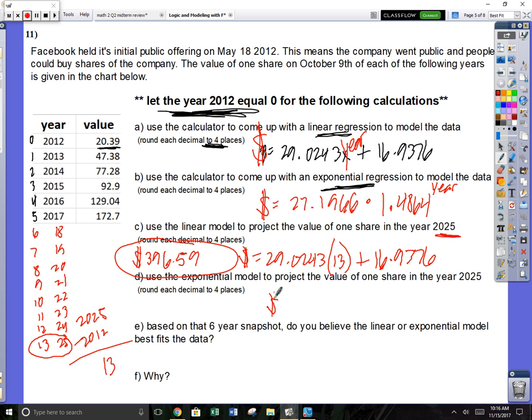Your exponential model, the money is going to equal 27.1966 times 1.4864 raised to 13. This one is going to spit out 4,701.96, almost 5 grand.